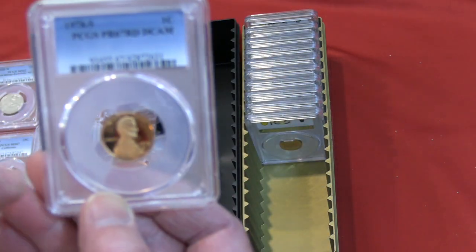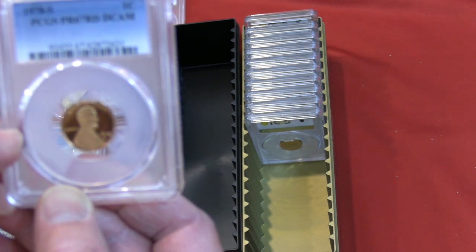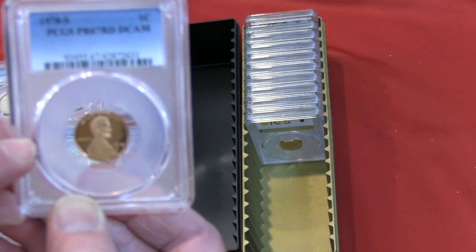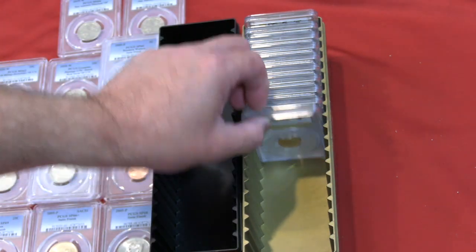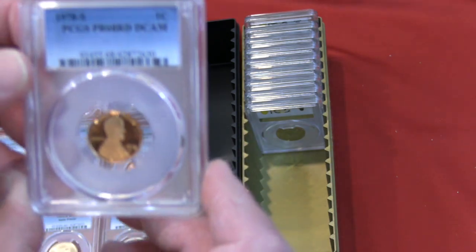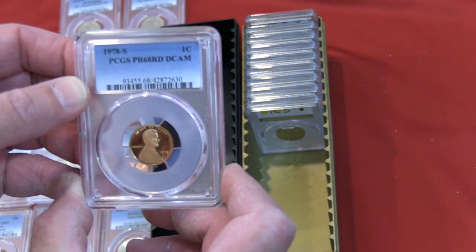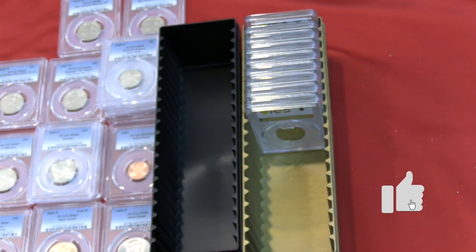78S penny PCGS proof 67 red DCAM. Nice. Another penny 1978S proof 68 red DCAM. It's even higher than the first one.